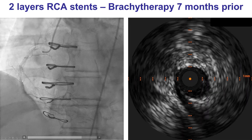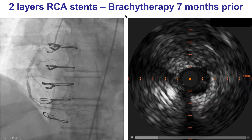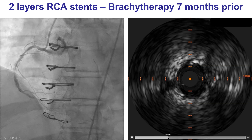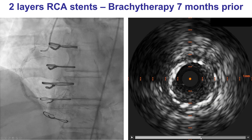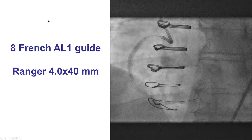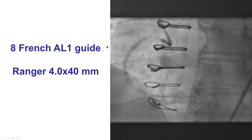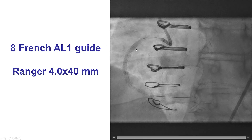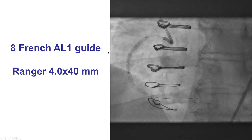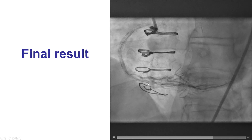This is another example of in-stent stenosis in a patient who had two layers of stents in the right coronary artery and brachytherapy seven months prior. There is significant neointima hyperplasia within the RCA stents. In this patient, we used a more deliverable drug-coated balloon — the Boston Scientific Ranger balloon — which, because it is a 0.018 balloon, could be delivered down the mid-right coronary artery through a 6 French guide catheter, and that provided a good result with minimal residual stenosis.